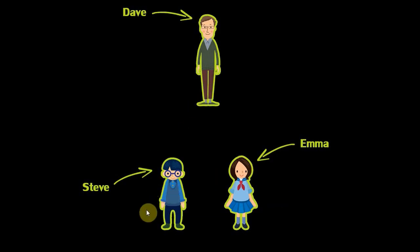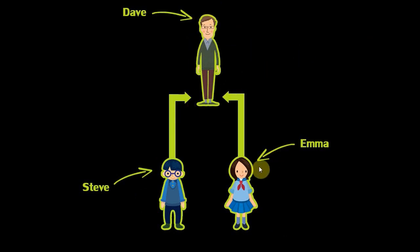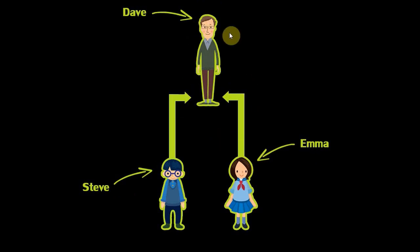So instead of having to duplicate that piece of information three times, we can just do it once and then tell these two children to get it from their father. So when we draw a diagram about inheritance, we have the parent at the top, then we have all the children at the bottom, and they have an arrow going from the children to the parent. Steve and Emma both inherit from their parent, which in this case is Dave.